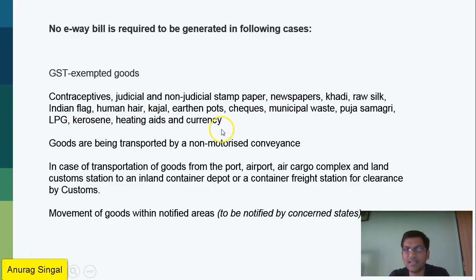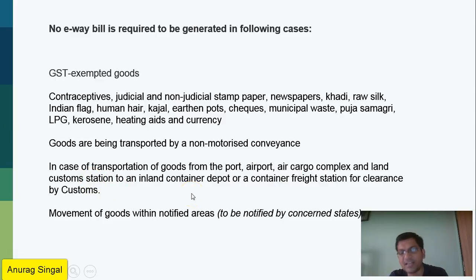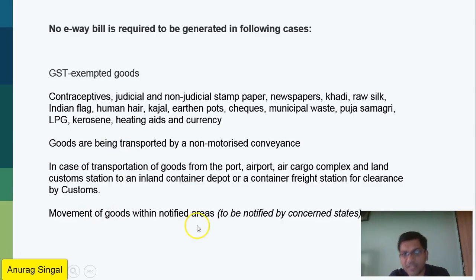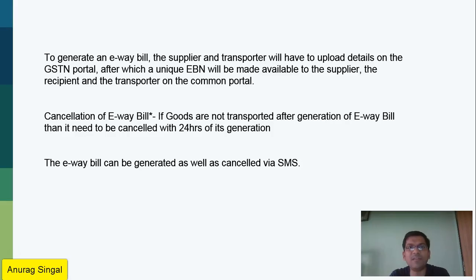If there is a non-motorized conveyance, then no e-way bill is required. If transportation is within a port, airport, air cargo complex, land customs station, inland container depot, or container freight station under customs clearance, then no e-way bill is required. Similarly, within a notified area — whichever states are notified — no e-way bill is required.